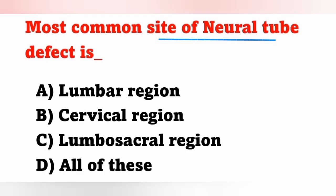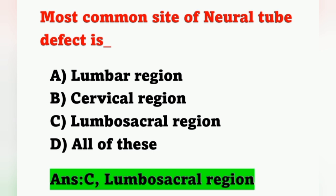Next question: Most common site of neural tube defect is? Options: A) Lumbar region, B) Cervical region, C) Lumbosacral region, D) All of these. The most common site of neural tube defect is the lumbosacral region. Option C is the correct answer.